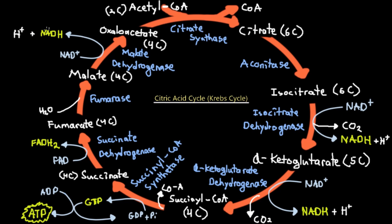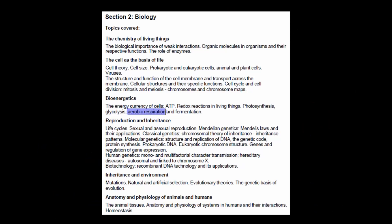Overall, one acetyl-CoA molecule produces 3 NADH, 1 FADH₂, and 1 ATP from one turn of the citric acid cycle. With two acetyl-CoA molecules per glucose, all values are doubled. This concludes part one; in part two we will examine how NADH and FADH₂ electron carriers are oxidized in the electron transport chain to produce large amounts of ATP through oxidative phosphorylation and chemiosmosis.